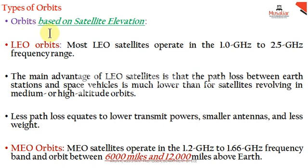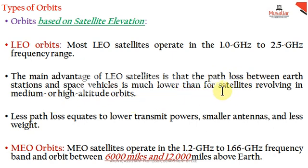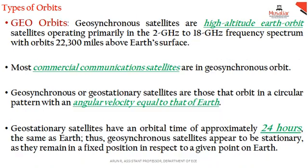Orbits can also be classified by satellite elevation — that is, height above the earth. We have Low Earth Orbit (LEO), Medium Earth Orbit (MEO), and GEO orbits. MEO ranges from approximately 6,000 to 12,000 miles altitude. LEO satellites have advantages such as lower path loss, lower transmitting power, and lower antenna height. Geosynchronous satellites operate at high altitude and are used for commercial communication applications.